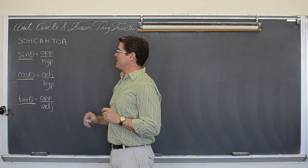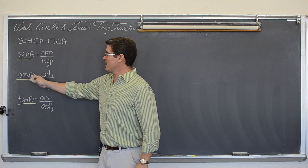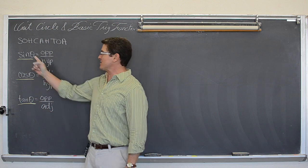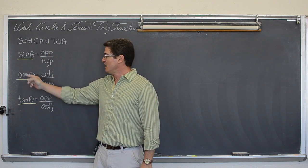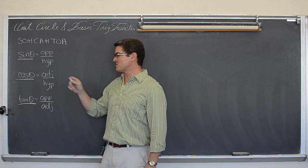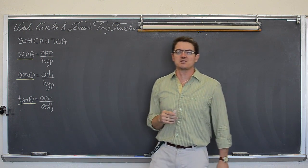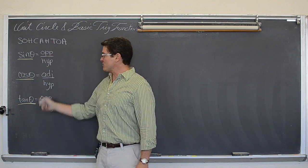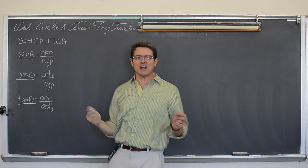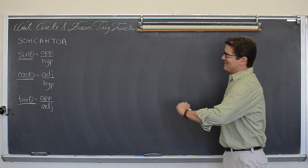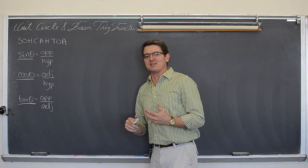Those three basic trig values are the values of sine, cosine, and tangent. Remember, any Greek letter in an advanced math book is an angle measurement. So the sine of a particular angle measurement is opposite over hypotenuse, the cosine of an angle measure is adjacent over hypotenuse, and the tangent of an angle is opposite over adjacent. The catchphrase for remembering this is SOH-CAH-TOA, just a little trick to help you remember how to set up those three basic trig functions.